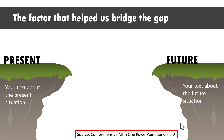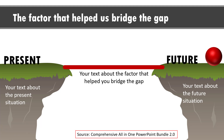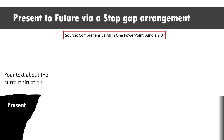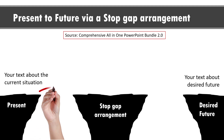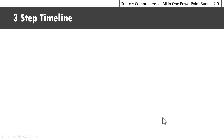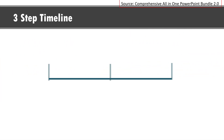Now just to showcase the power of custom animation in helping you tell beautiful stories in PowerPoint, I'm going to show you five examples from the comprehensive all-in-one PowerPoint bundle. This first template shows the present and the future, and on a click, I show the hesitation someone feels in making the jump from present to future. Then on a click, I show the factor that helped bridge the gap. If you want to visualize the story with a stopgap arrangement in the middle, you can use this template — on a click, I talk about the present, then the future, then the stopgap arrangement. Here is the next example: a simple three-step timeline in a dramatic fashion using hand animation. We reveal the timeline, then the first event, the second event and the third event.